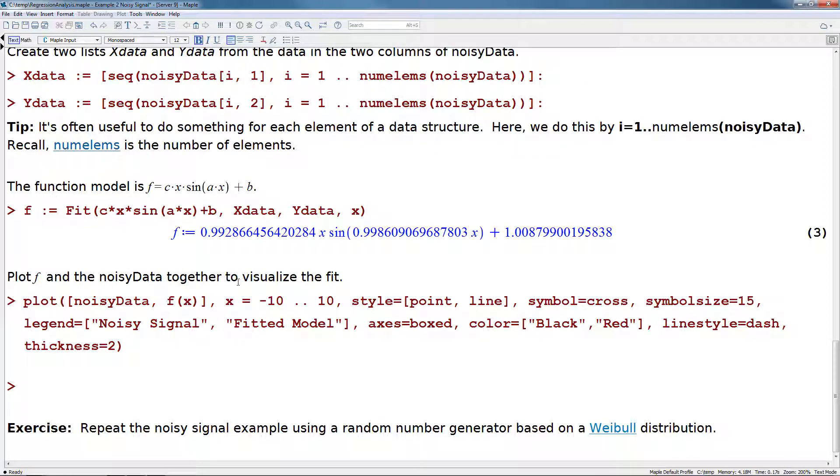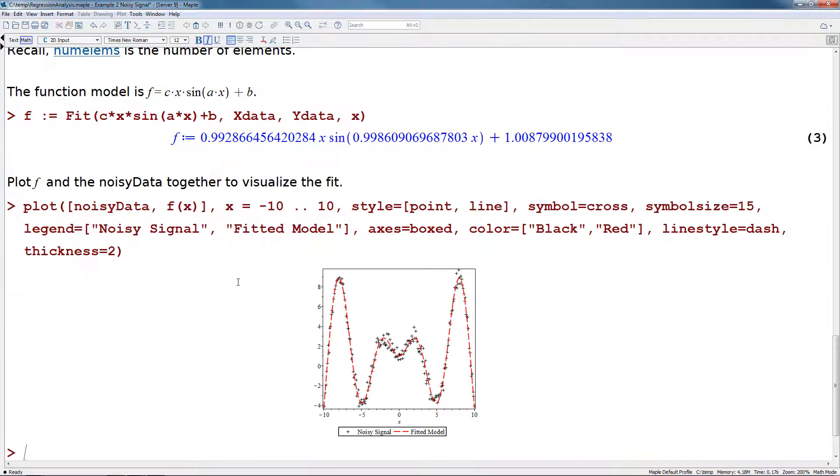We can plot f and the noisy data together to visualize the fit. As before, the black crosses represent the noisy signal. But what's been added here is a red dashed line that represents the fitted model that's been generated by the fit command.